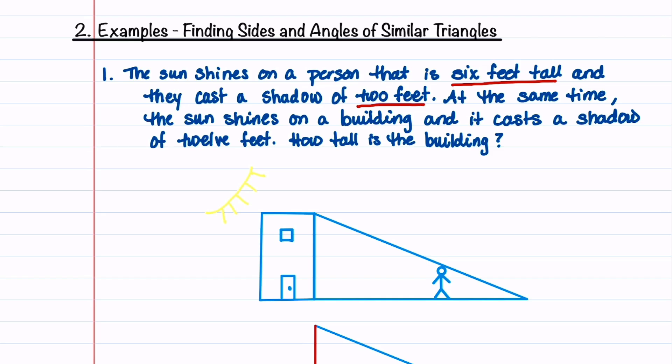At the same time, the sun shines on a building and it casts a shadow of 12 feet. And we want to know how tall is the building. So in our diagram, you can see we have the building with a person and then the sun shining on both of them.